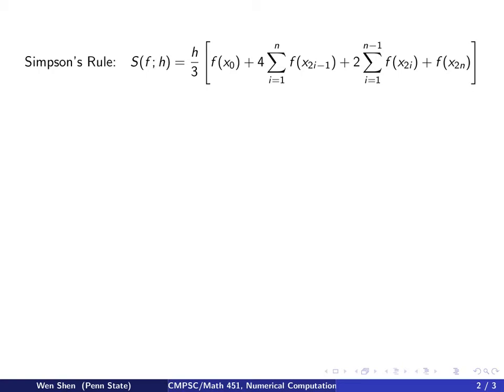So we recall the Simpson's rule here on the top. Remember all the even index function evaluations multiplied by 2 and the odd ones multiplied by 4 and the two boundary ones are just multiplied by 1. And the whole thing is added up and then multiplied with a factor of h over 3.